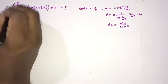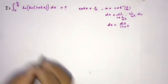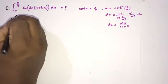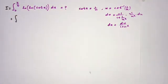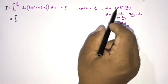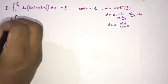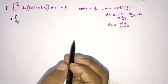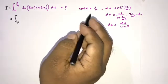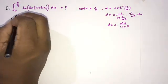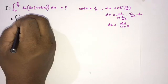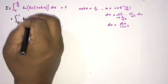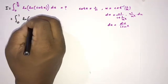We can now substitute into the integral, calling it I. We change the boundaries: when x approaches 0, u approaches 0; when x approaches π/4, u approaches 1. So the upper limit becomes 1.